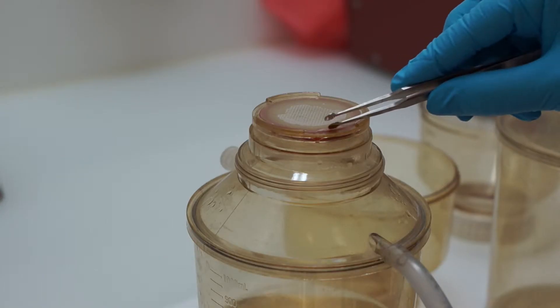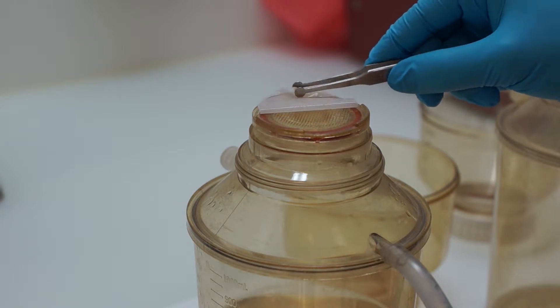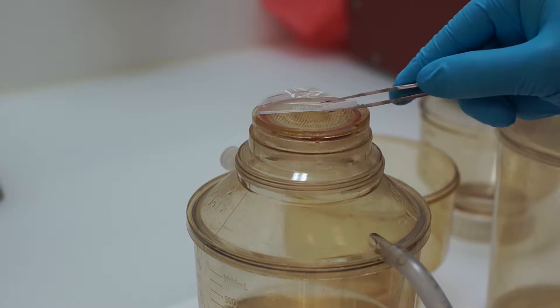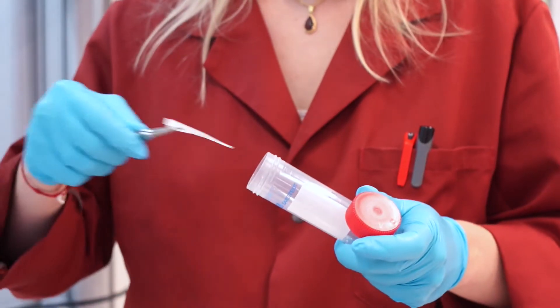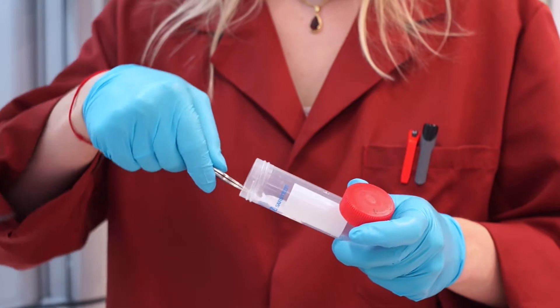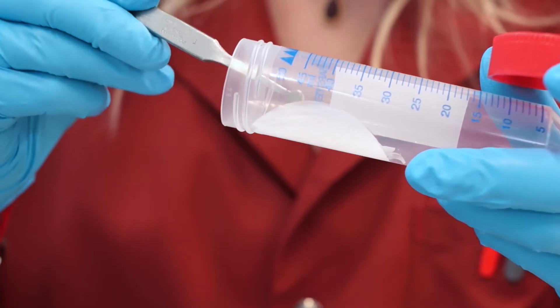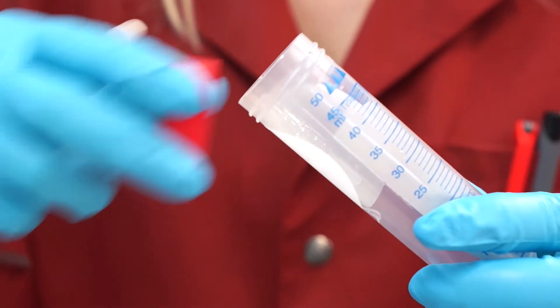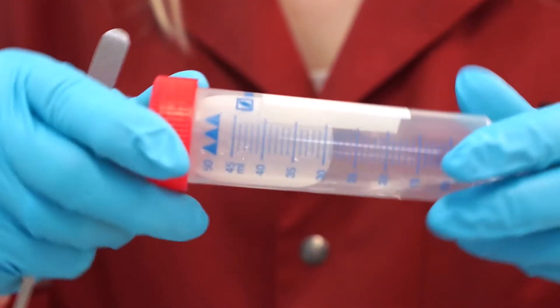With tweezers I'm folding the filter so that one margin is overlapping the other. I remove it from the filtration unit and place it into a 50 ml Falcon tube that I have prepared beforehand. I carefully unfold the filter so that the shiny side comes into contact with the buffer.